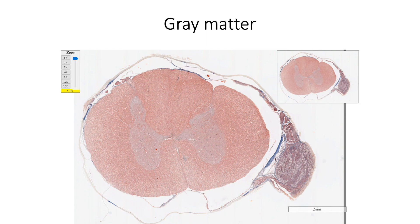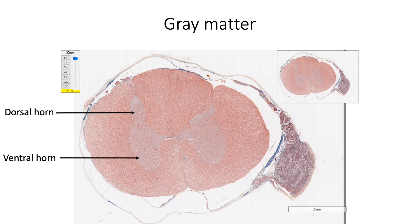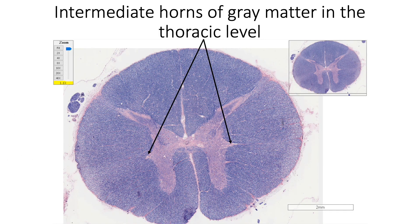On either side, the grey matter shows a ventral horn and a dorsal horn. While the white matter separates the ventral horn from the surface, the dorsal horn extends to the surface showing four distinct parts: apex, head, neck, and base. In the thoracic segments, an additional intermediate horn of grey matter can also be seen on both sides, where preganglionic sympathetic neurons are located.